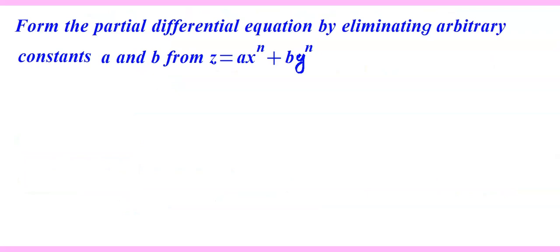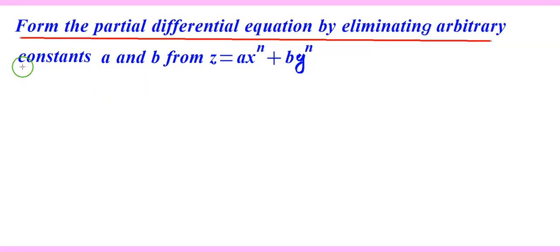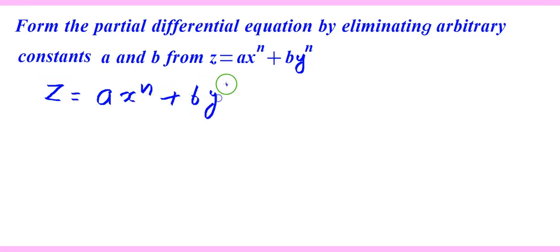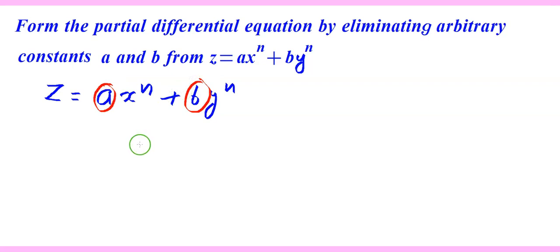Here we are going to learn how to form a partial differential equation by eliminating arbitrary constants. Form the partial differential equation by eliminating arbitrary constants a and b from z = ax^n + by^n. We are going to use partial differentiation to eliminate these constants. Let us first differentiate z = ax^n + by^n partially with respect to x.